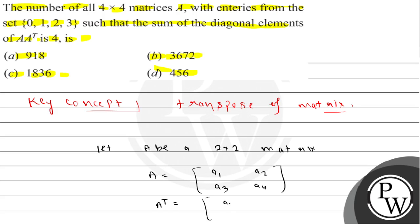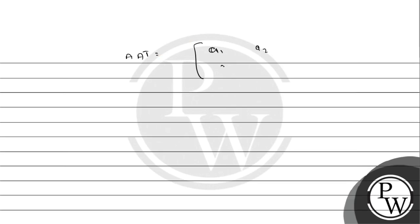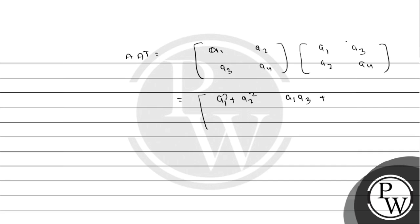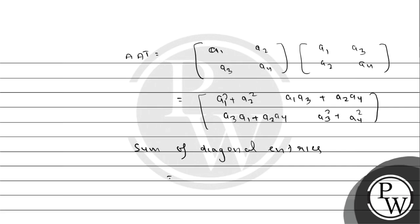A transpose of A gives us A times A^T. The diagonal entries of AA^T for the 2×2 case come out to: first diagonal entry is A1·A1 + A2·A2, and the second diagonal entry involves A3·A1, A3·A3, A3·A2, A4. So the sum of the diagonal entries is A1² + A2² + A3² + A4².